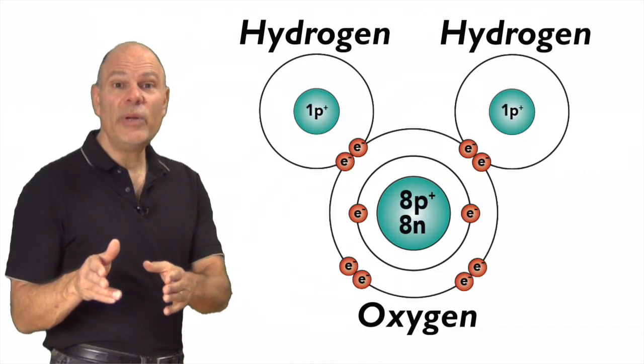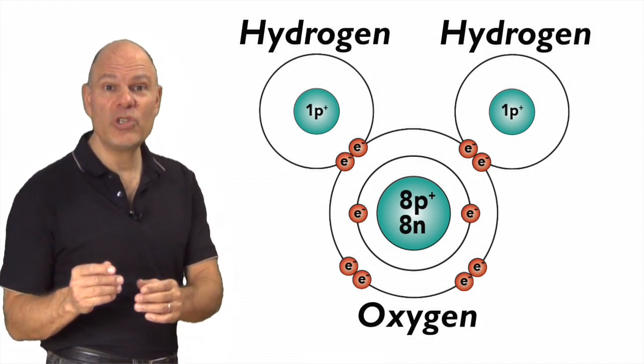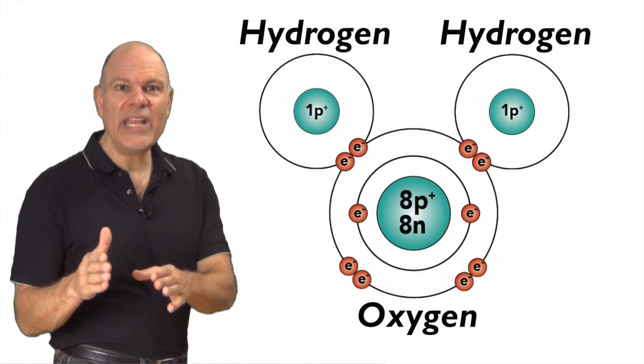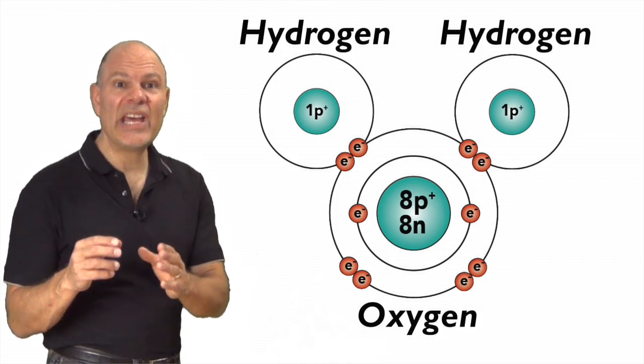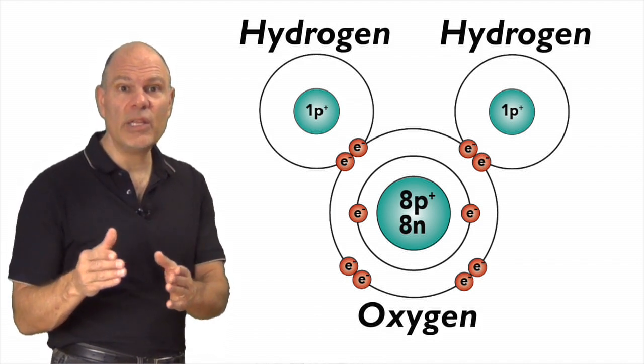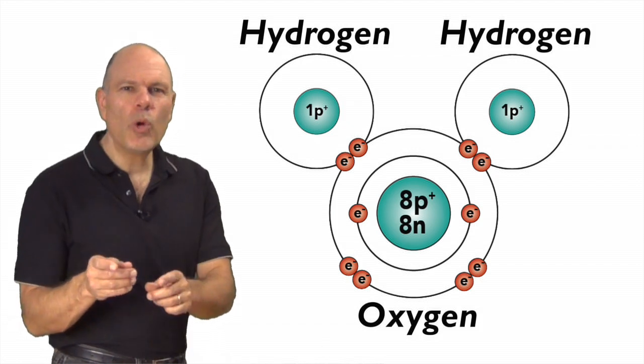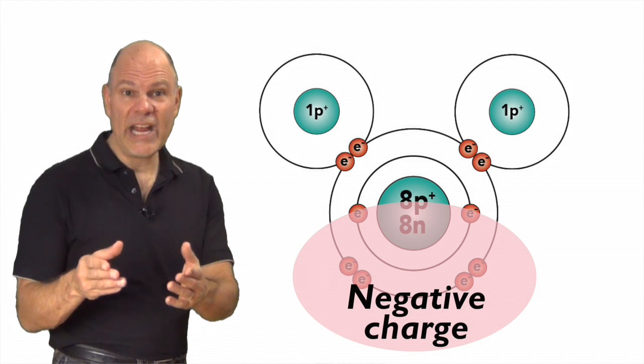Because there are so many more positive charges in the oxygen nucleus than in either of the two hydrogen nuclei, the way that the negative electrons are shared isn't equal. What happens is that the oxygen nucleus hogs all the electrons, pulling them toward the oxygen side of the molecule. Because more electrons are on the oxygen side, that side winds up with a negative charge.